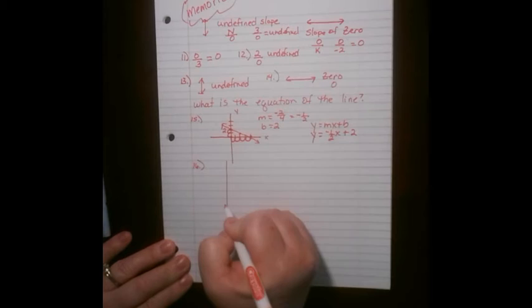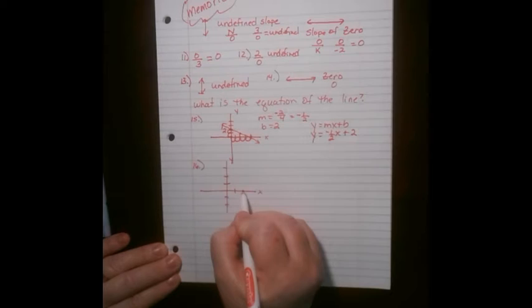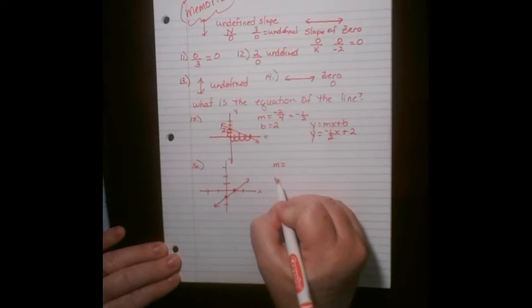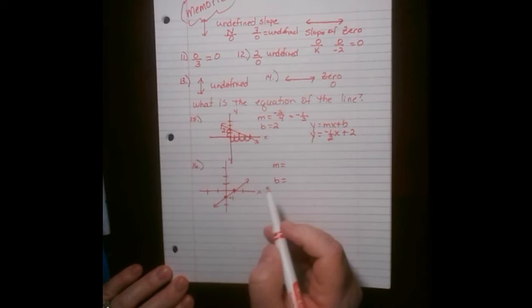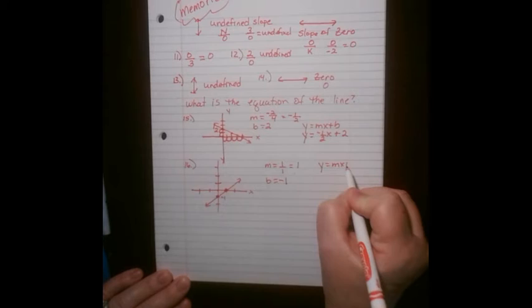For number 16, we have the points (1, 1) and (−1, 1). The y-intercept is at negative 1. The slope goes up 1 to the right 1, so it's 1 over 1, which is just 1. Plugging into y equals mx plus b: y equals 1 times x minus 1. On the test paper the 1 wouldn't be written, so it would just look like y equals x minus 1.